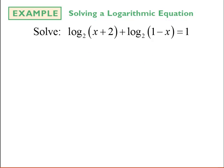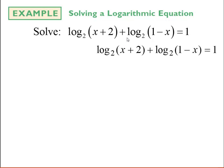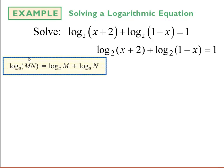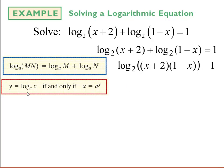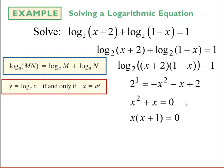In the next example, I notice on the left-hand side I have two logarithms being added, so I'll use the product rule to combine them into one logarithm — multiplying the insides. Now that I have one single logarithm, I'll rewrite it in exponential form: the base 2 raised to the power of 1 equals what's inside. That gives me a quadratic equation, so I'll bring everything to one side and factor out a common x, giving x equals 0 or x equals negative 1 as possible solutions.